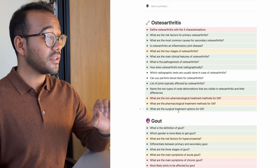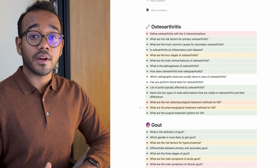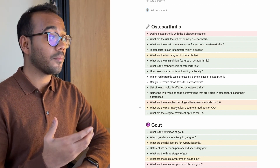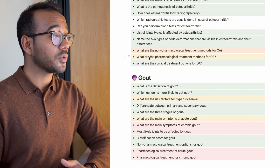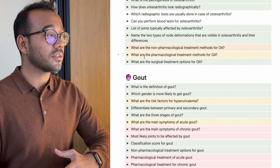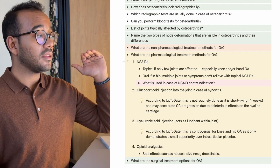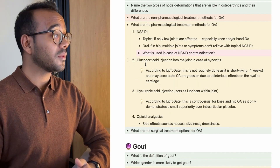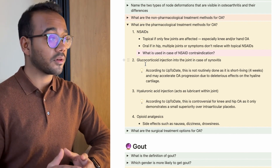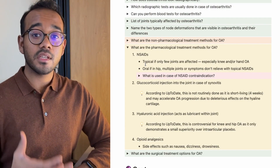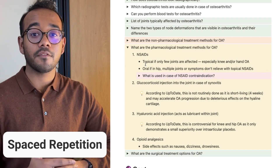All my notes go underneath questions, which ensures I'm actively recalling when I revise. For example: 'What are the pharmacological treatment methods for osteoarthritis?' When revising, I try to recall the answer first, then click the toggle to reveal it — NSAIDs, glucocorticoids, hyaluronic acid injections, and opioid analgesics. Depending on how I answer, I grade myself using a traffic light system: green if correct, yellow if okay, red if completely wrong. Over time you can see your weak spots and revise difficult parts more often, easier parts less often. This is spaced repetition.